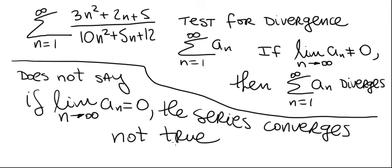What it does mean, if the limit is 0, the series may converge or it may diverge. We have to try something else. But it does not mean that the series will automatically converge. So let's get back to the series that we're working with.